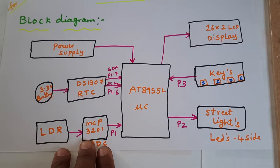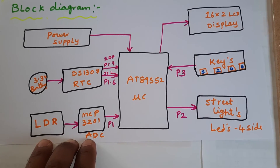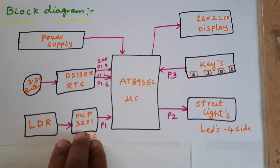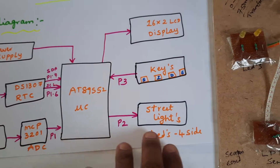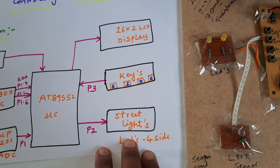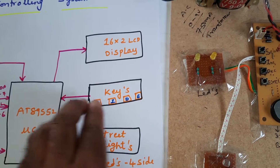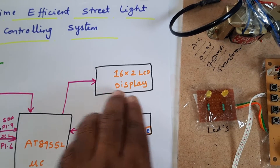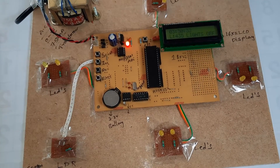The LDR — light dependent resistor — and MCP3201 ADC, a successive approximation 12-bit ADC, are connected via SPI protocol to send data to the microcontroller. We are using four-sided street lights connected to P2; switches are connected to P3, and the LCD is connected to P0.